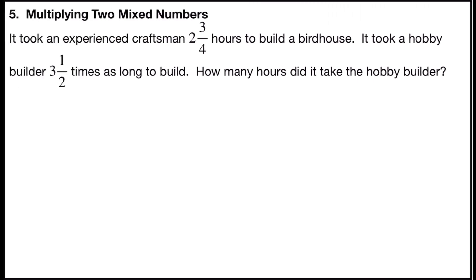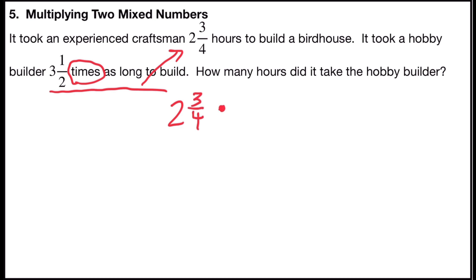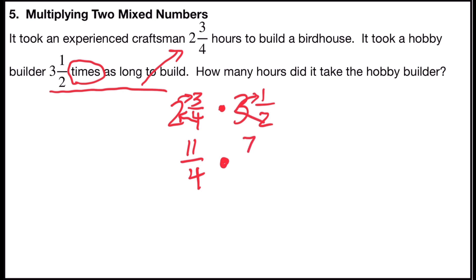Problem number five is multiplying two mixed numbers. It took an experienced craftsman two and three-fourths hours to build a birdhouse. It took a hobby builder three and a half times as long. How many hours did it take the hobby builder? The key word is 'times.' Converting to fractions: four times two is eight, plus three is eleven, over four; and two times three is six, plus one is seven, over two.